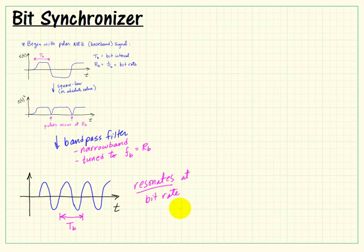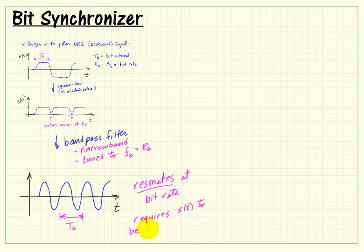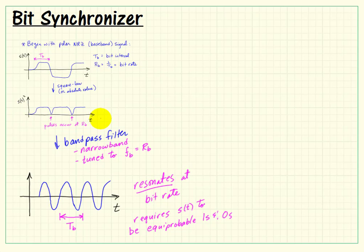It produces this nice sinusoidal signal. Now, in order for this technique to be effective, we need to ensure that the signal we are processing is pretty much looking like it has equiprobable ones and zeros. It doesn't have to be precisely that way from one bit interval to the next, but we need to see a lot of activity back and forth on that signal. Long runs of a constant signal would mean we are not exciting the filter any longer, and that signal is going to tend to die out.